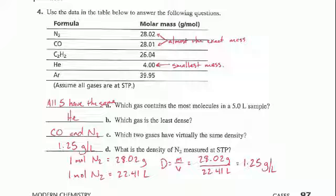C asks, which two gases have virtually the same density? Again, volume's not changing here. We have 5.0 liters.